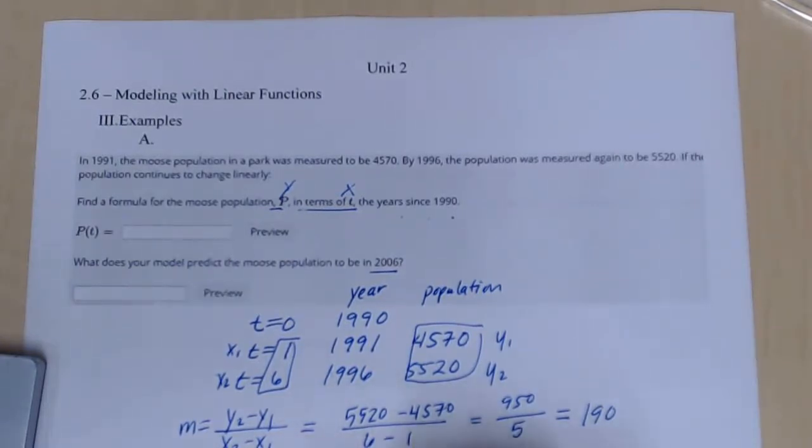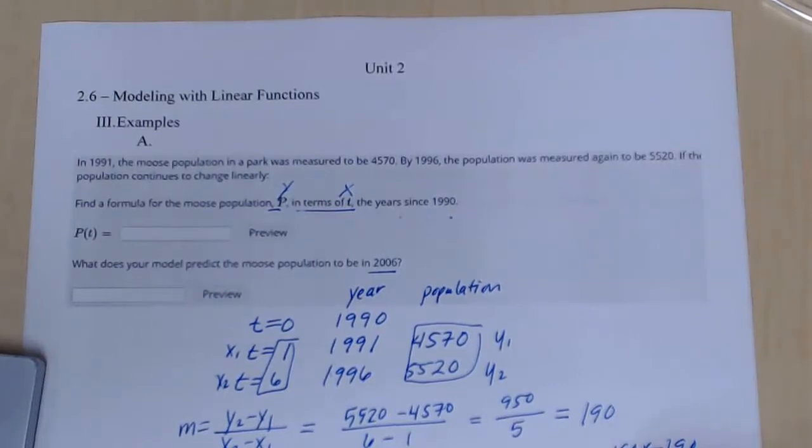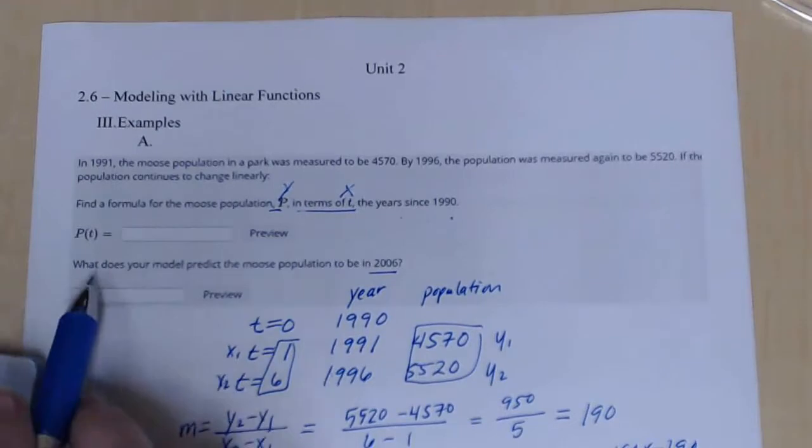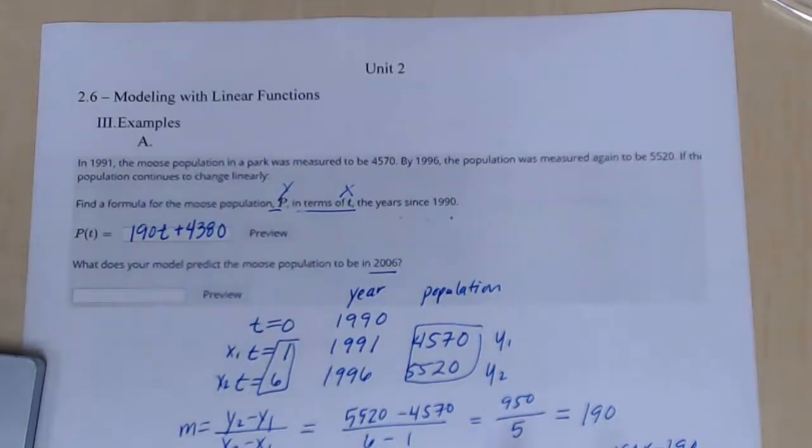Do your point slope form. So y minus y1 equal to m of x minus x1. If you like y equals mx plus b, do that. It'll still work. So y minus 4570 equal to 190x minus 190, and then add this over. So it gives me y equal to 190x plus 4570 minus 190. So it gives me 4380. So that would be my part one. Make sure I use my correct variable. So I'm going to say 190t plus 4380, because they're using t and p.